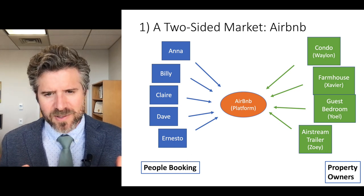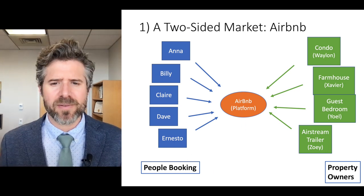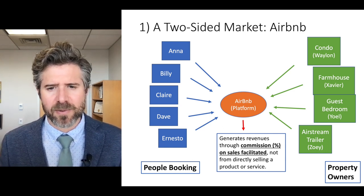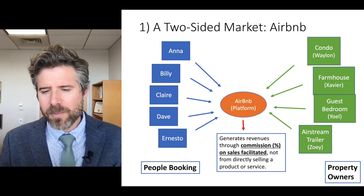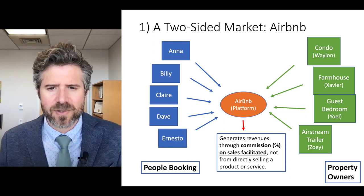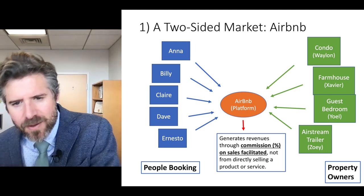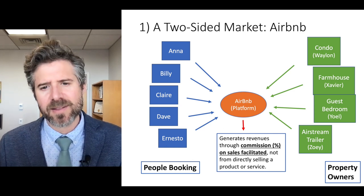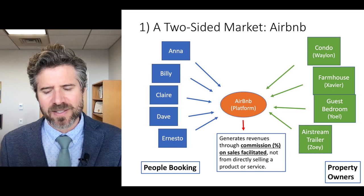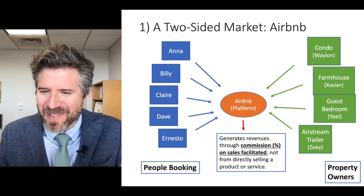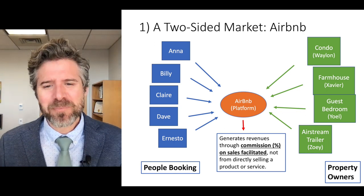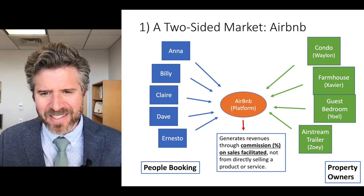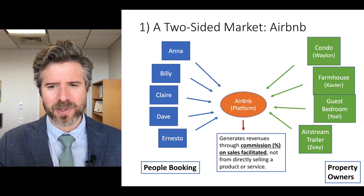What's so interesting about Airbnb is they generate revenue as a commission percentage on the total sales facilitated on their platform. Unlike Safeway, Airbnb never has a traditional cost of goods sold — Airbnb isn't buying a hotel and then renting you those rooms. Airbnb exists to facilitate that transaction, and that's what makes it so interesting. I spend time identifying both the pros and the cons of what they do.